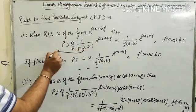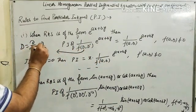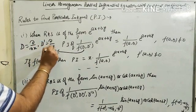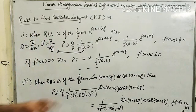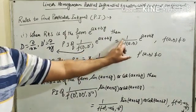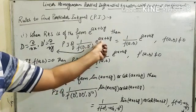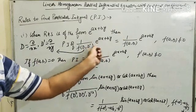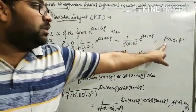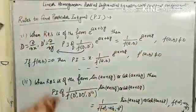D stands for del over del x and D' stands for del over del y. So, 1 upon f(D, D') of e raised to power ax plus by is equal to 1 upon f(a, b) times e raised to power ax plus by — that is, we can change D by a and D' by b — providing f(a, b) is not equal to 0.